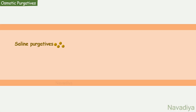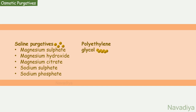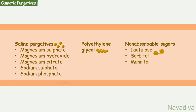Among osmotic purgatives are various saline purgatives like magnesium sulphate, magnesium hydroxide, magnesium citrate, sodium sulphate, and sodium phosphate. Then we have polyethylene glycol and non-absorbable sugars like lactulose, sorbitol, and mannitol.